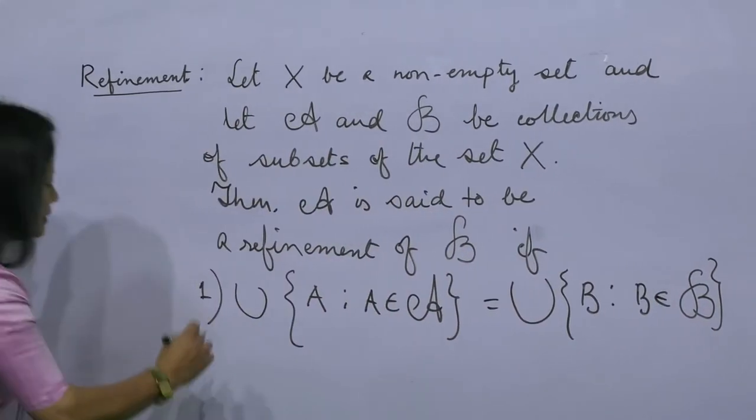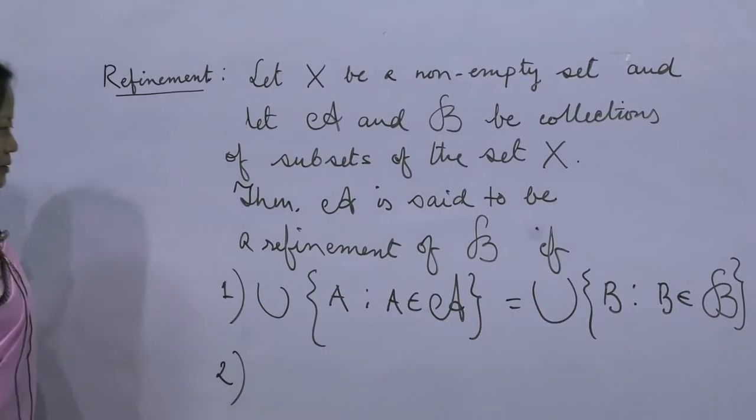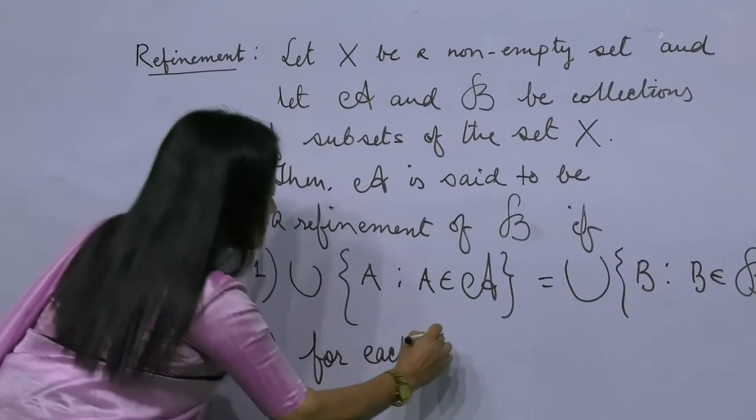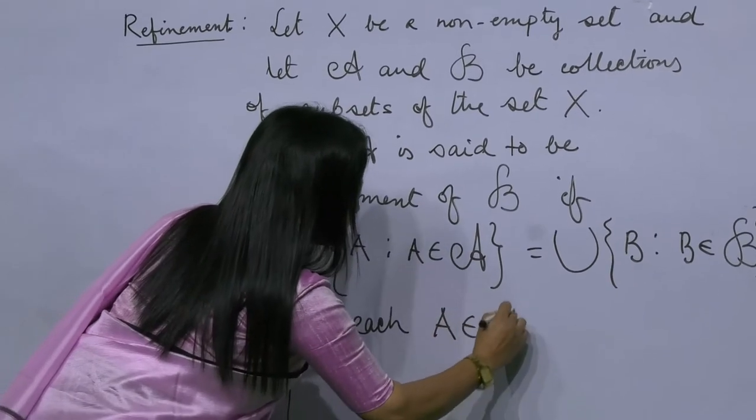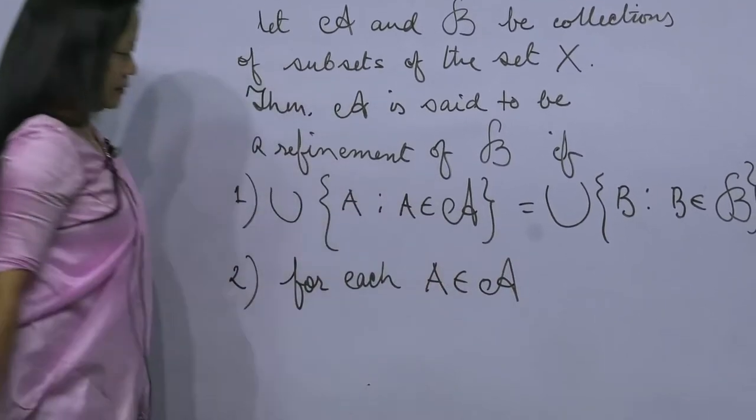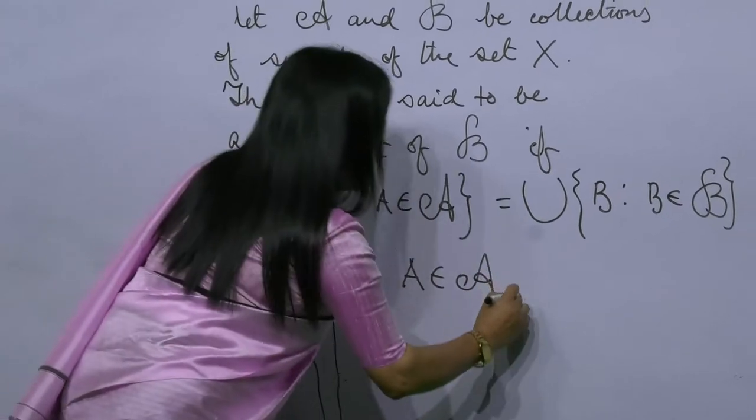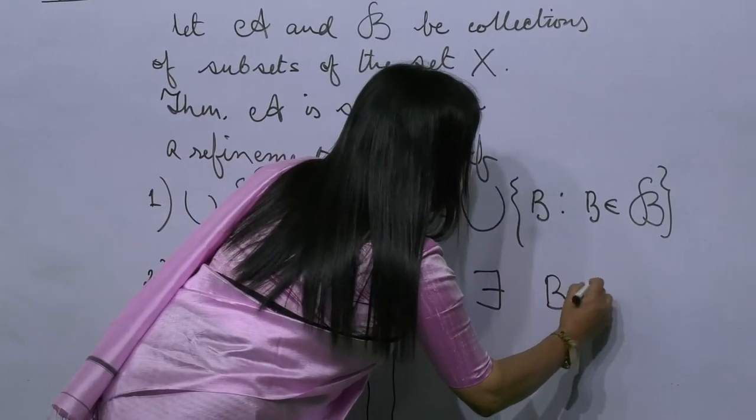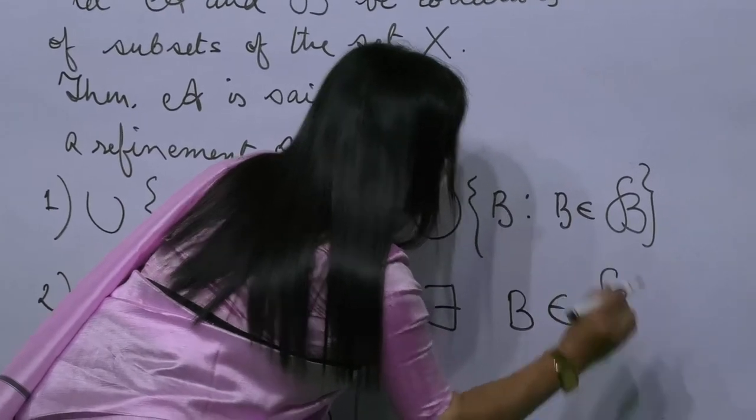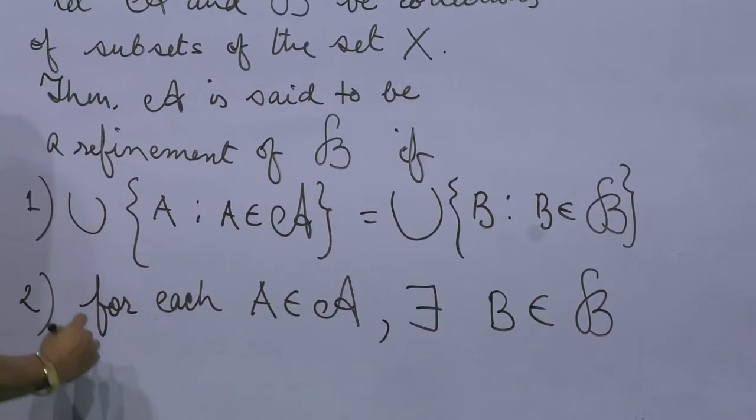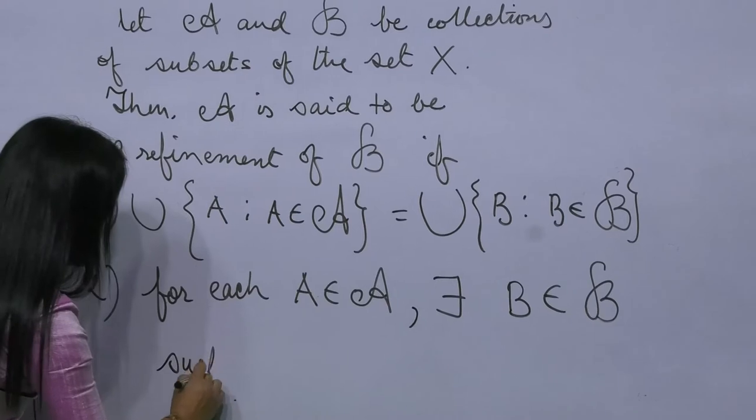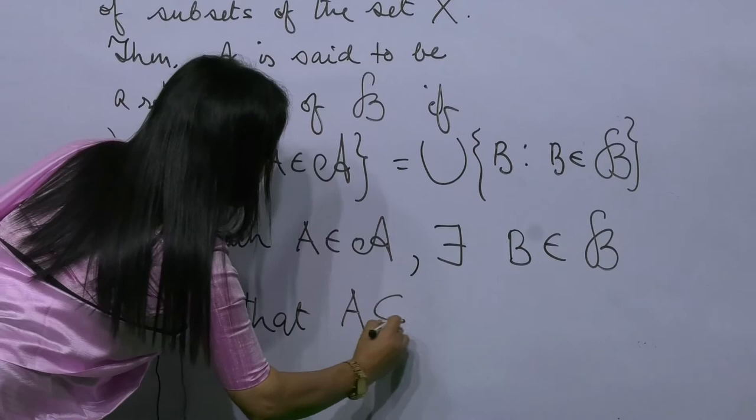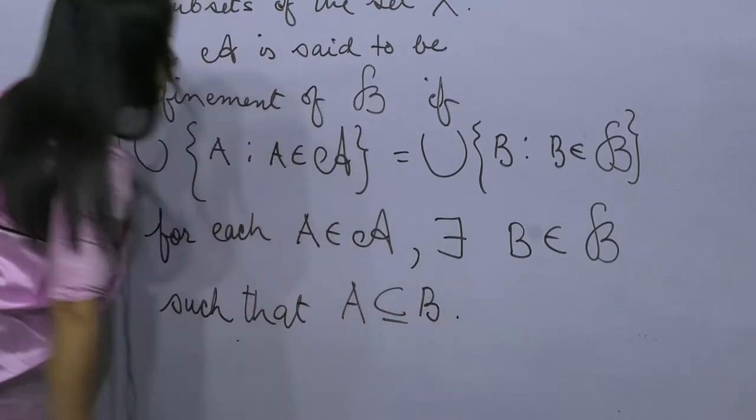And the second condition is for its member A of the collection A, there exists another member B of the collection B such that A is a subset of B.